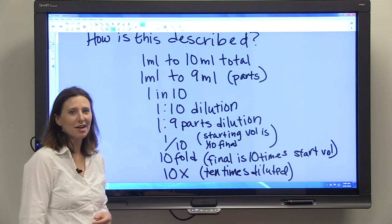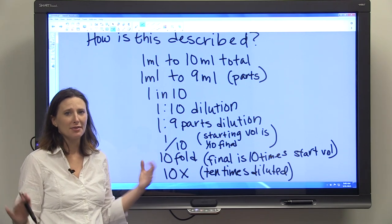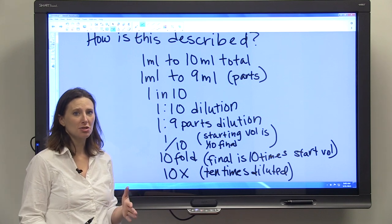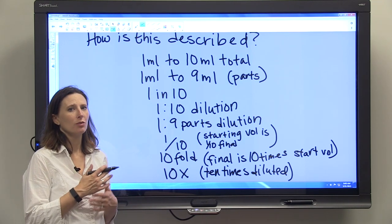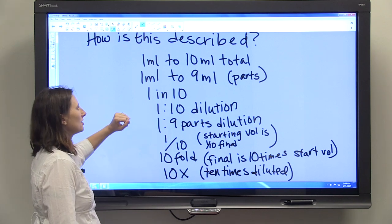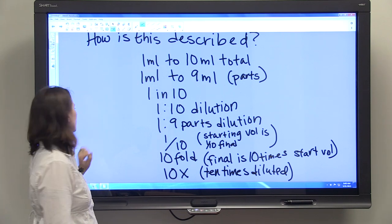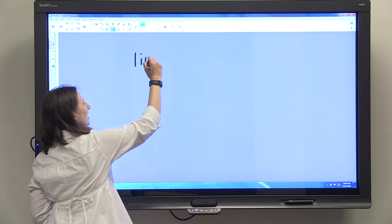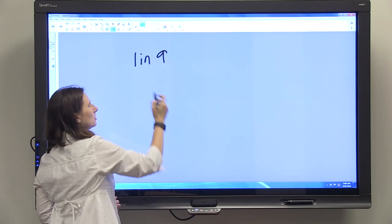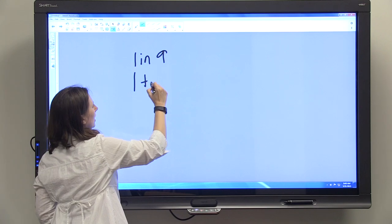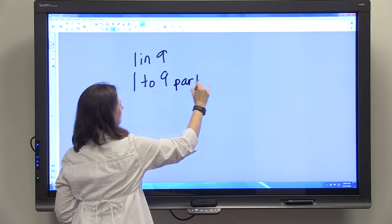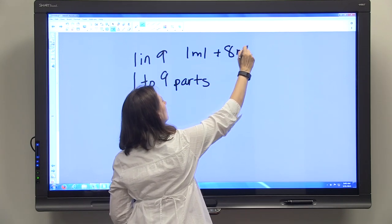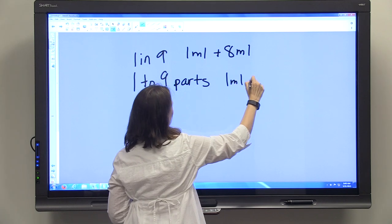So, that's a lot of ways to describe one dilution. That's why it's really important anytime you're doing a dilution in the lab that you read the instructions, your operating procedure, whatever you've been given, really carefully. Because it's going to be different if you do a 1 in 9 versus a 1 to 9 parts. This is 1 ml plus 8 mls and this is 1 ml plus 9 mls.